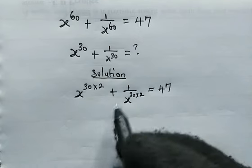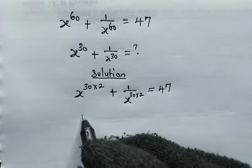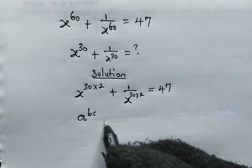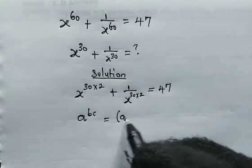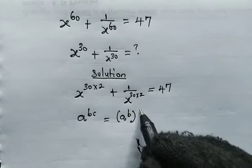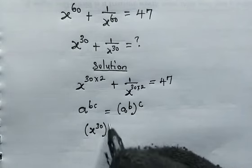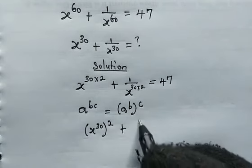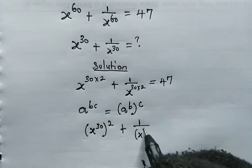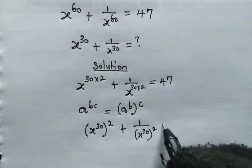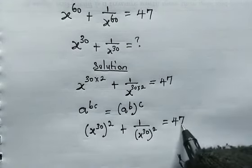From the left hand side here, let us take note of this. When we have a to the power of b times c, we can actually express this as a to the power of b then raised to the power of c. So from here we get x to the power of 30 squared plus 1 over x to the power of 30 squared, this is equal to 47.